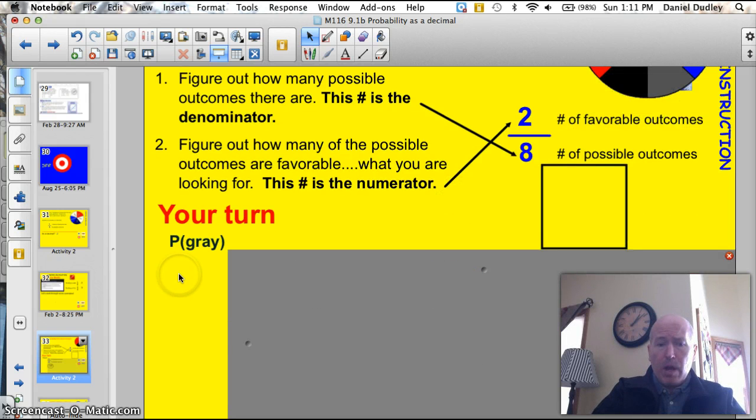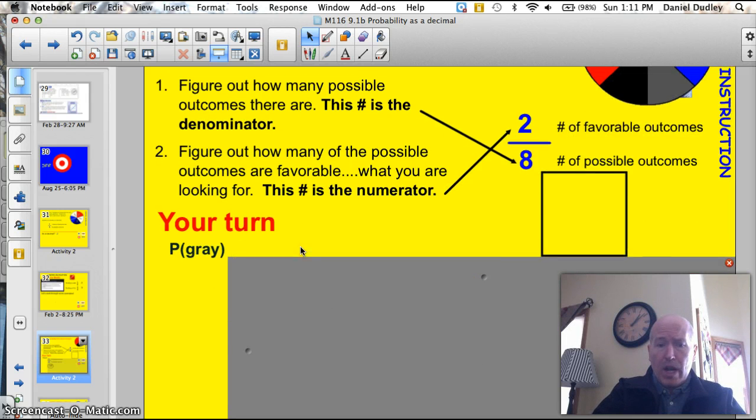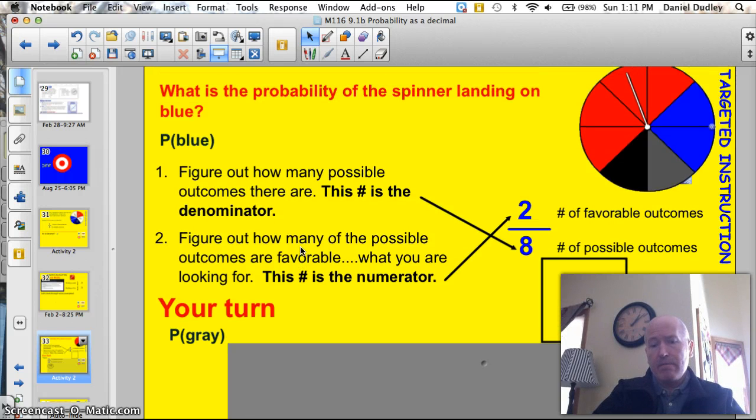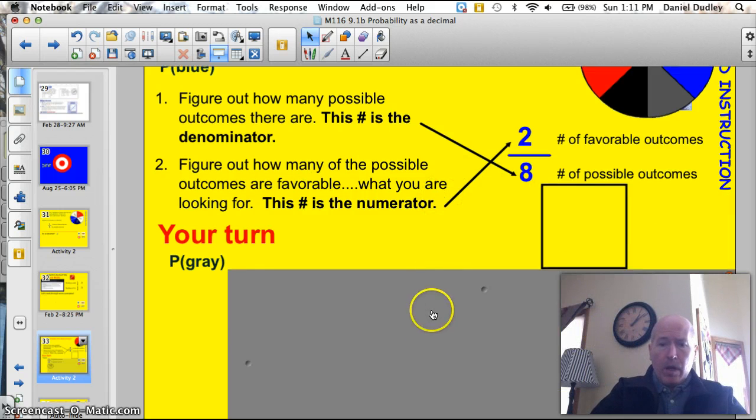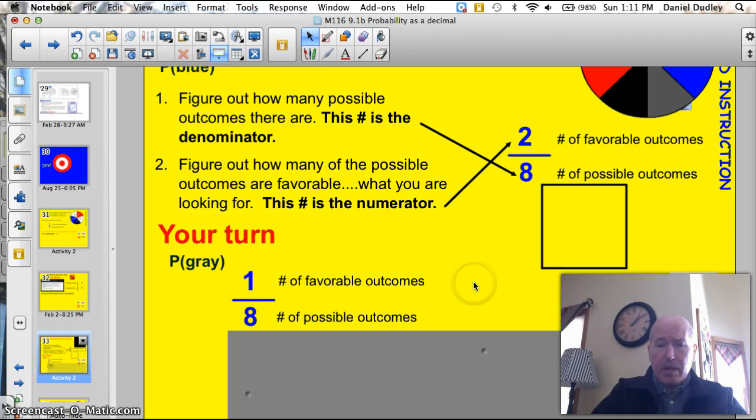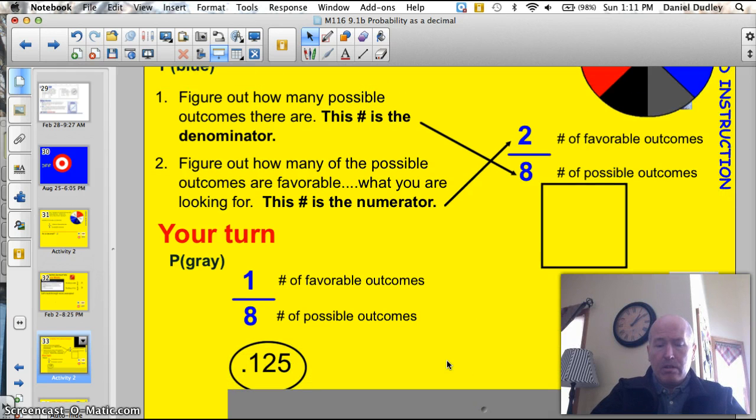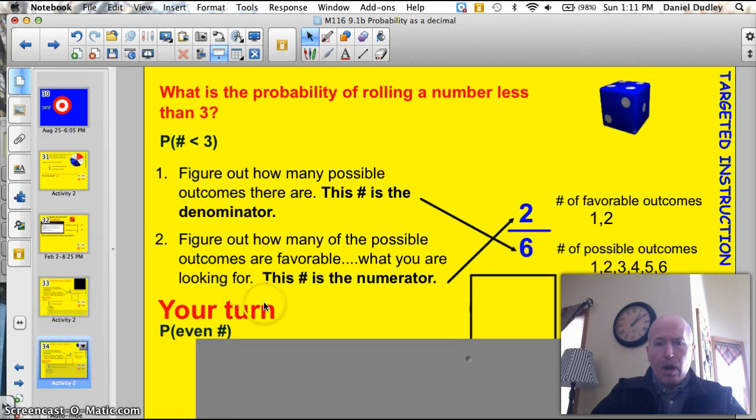All right, your turn. Find what the probability of getting a gray square, or a gray triangle, if you were to spin. Go ahead and take a look at it. All right, let's see how you did. Well, there's only one gray slice up there, and so your chances are 1 out of 8. Is that your answer? No, sir. No, ma'am. You need to put it as a decimal. So if you divide 1 by 8 on your calculator, you're going to get 0.125. Hopefully, you know that 1 eighth equals 0.125 as a decimal.